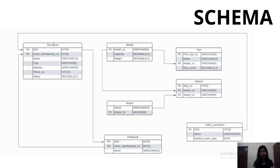Our first table is technician. It has seven attributes: SSN, union membership number, name, type, address, phone number and salary. The primary key for the technician table is SSN, while it has a foreign key reference with union membership number of the employee table. Our next table is model, with three attributes: model number, capacity and weight. Its primary key is model number. Our next table is airport, with two attributes: name and airport ID. Its primary key is airport ID. Our next table is employee, with three attributes: SSN, union membership number and name. Its primary key is union membership number, but it has a foreign key reference with SSN of the technician table.